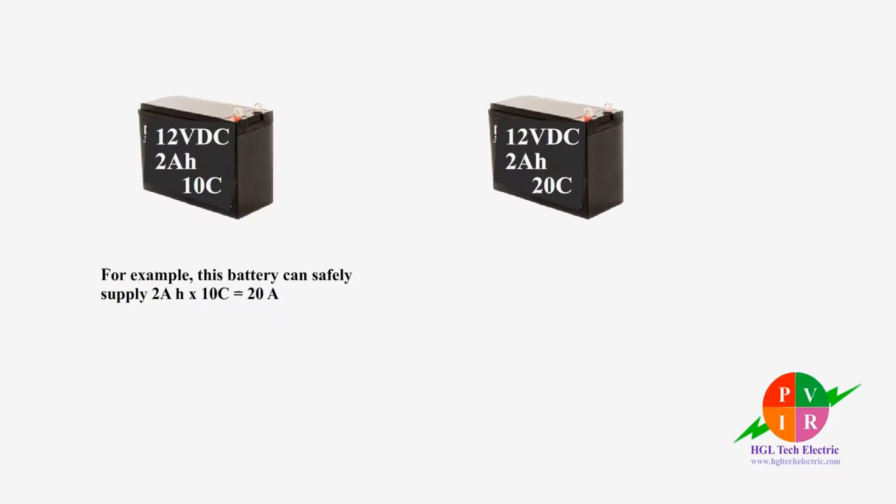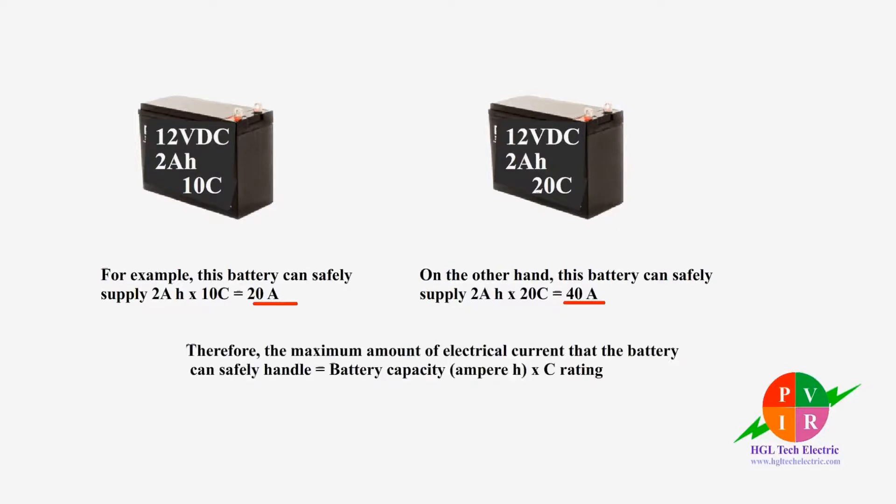For example, these two batteries look identical, they both have the same voltage and the same amp hour capacity. However, they have different C ratings. The one with a higher C rating can safely deliver more current.